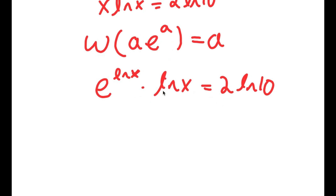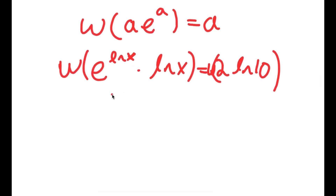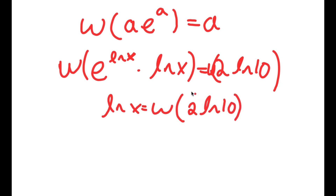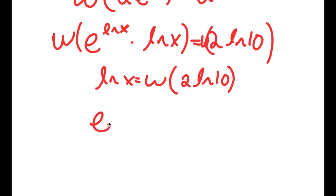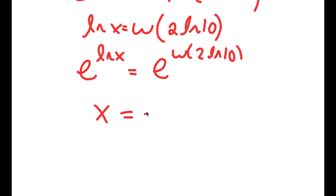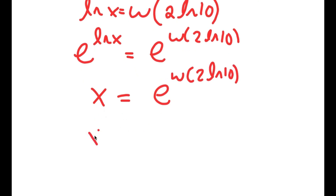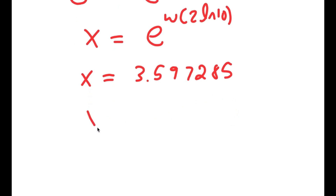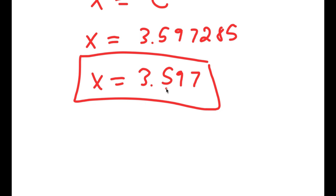This is now in the form a times e to the power of a. Taking the Lambert W function on both sides, this results in ln x equaling W of 2 times ln 10. Taking e to the power of both sides, e to the power of ln x equals x, so x is equal to e to the power of W of 2 times ln 10. This equals approximately 3.597285, which rounds to 3.597. This is my answer.